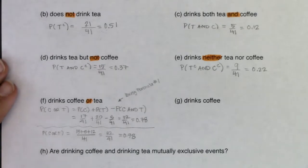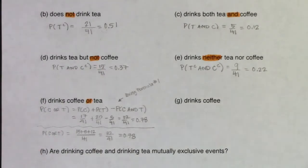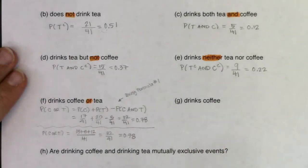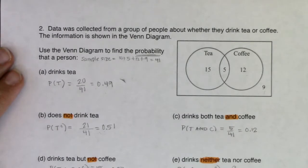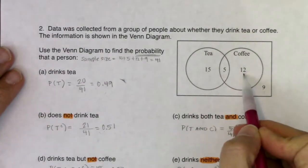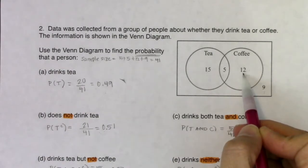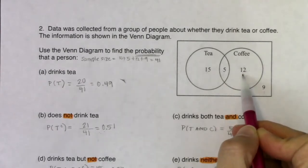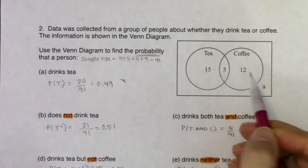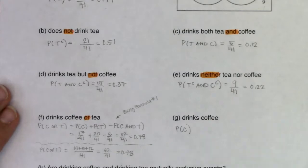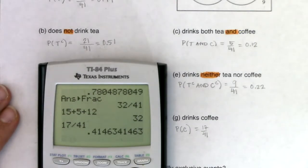For part G, what's the likelihood that somebody just drinks coffee? It is not just the 12 people — there are 17 coffee drinkers total: the 12 that drink only coffee, plus the 5 who also drink tea but still drink coffee. So that's 17 out of 41, which is about 41%.